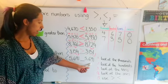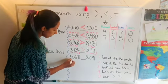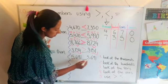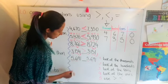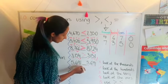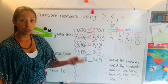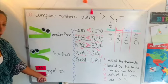And finally we have this one where first number thousands the same, hundreds the same, tens the same, ones the same. What does that mean? Equal to.